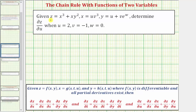Notice here the given function z is a function of two variables, where x and y are functions of three variables: u, v, and w. Therefore to find this partial derivative, we'll have to apply the chain rule, which is given here below, where if the given function z is a function of two variables which are functions of three independent variables, we would use the chain rule to find the partial derivatives given here below.